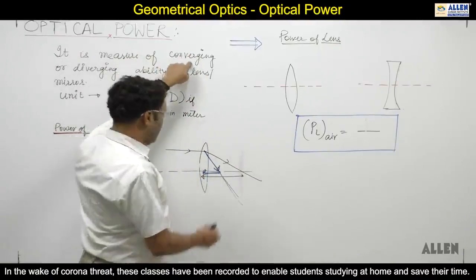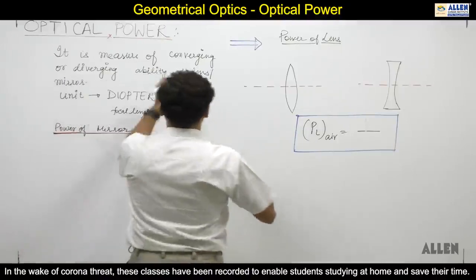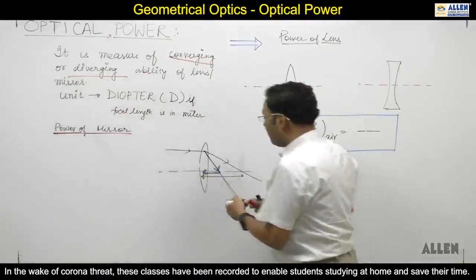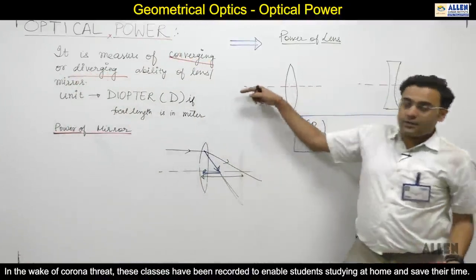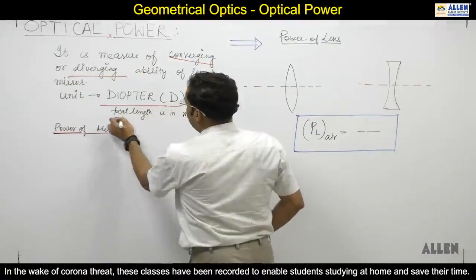It measures the converging or diverging ability of the lens - how much it converges or diverges. I mean, I will tell you which one diverges more. This is clear. The unit is the diopter when the focal length is in meters.